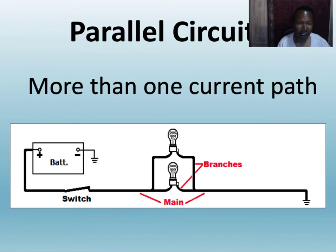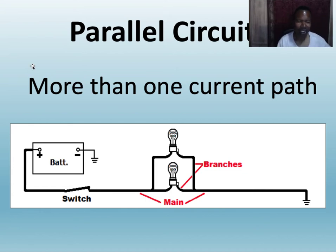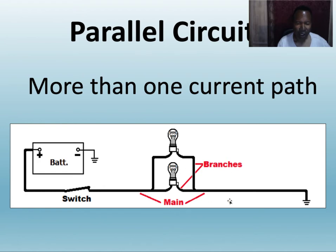We're going to look at parallel circuits. A parallel circuit has more than one path for current to flow. As you can see on this slide, I have a battery, a switch, and two loads — and you can see I have more than one branch, this one and this one.